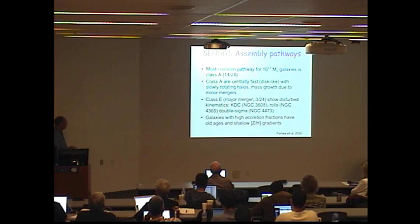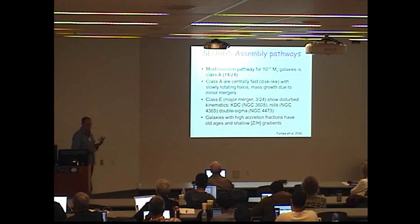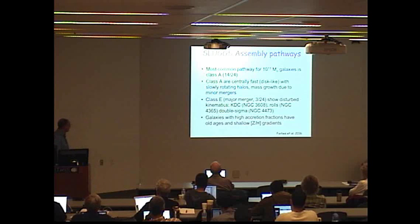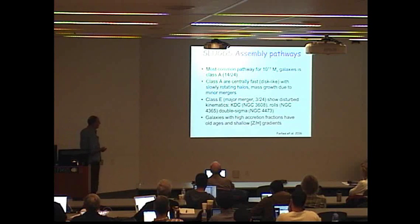The mass growth is largely due to minor mergers. Another interesting class that we had is class E. Three of our 24 like this, these are due to major mergers and they often showed very disturbed kinematics that included one galaxy that has a kinematically distinct core.